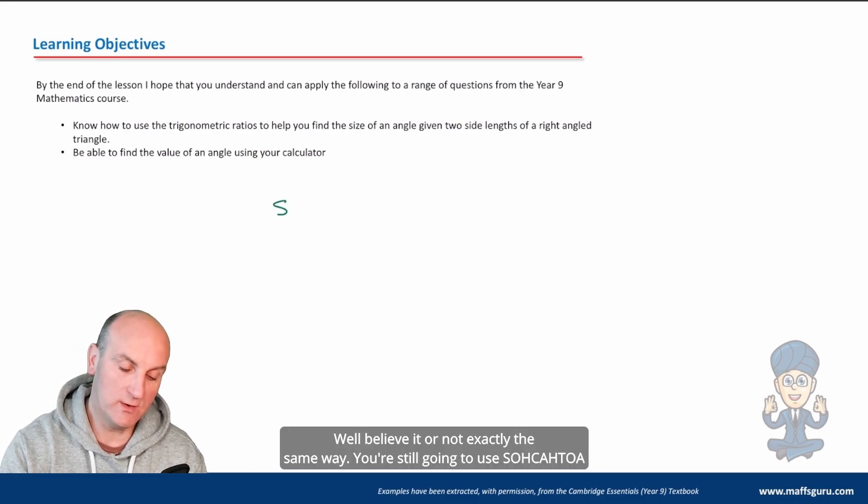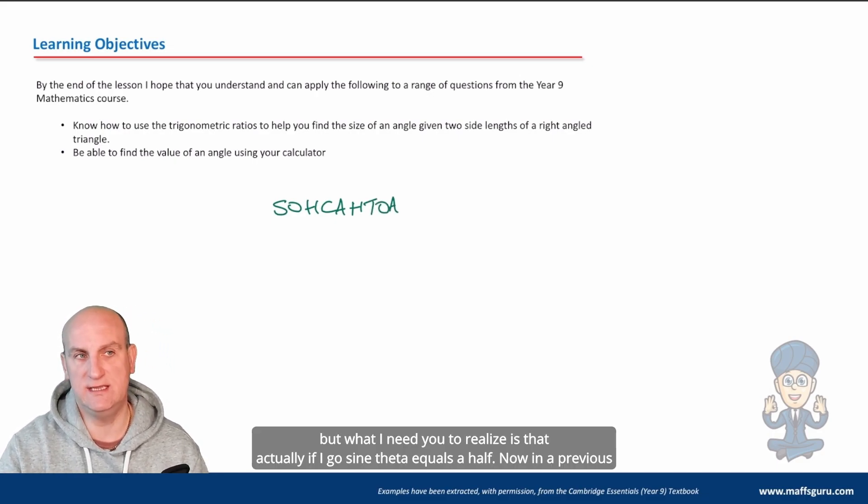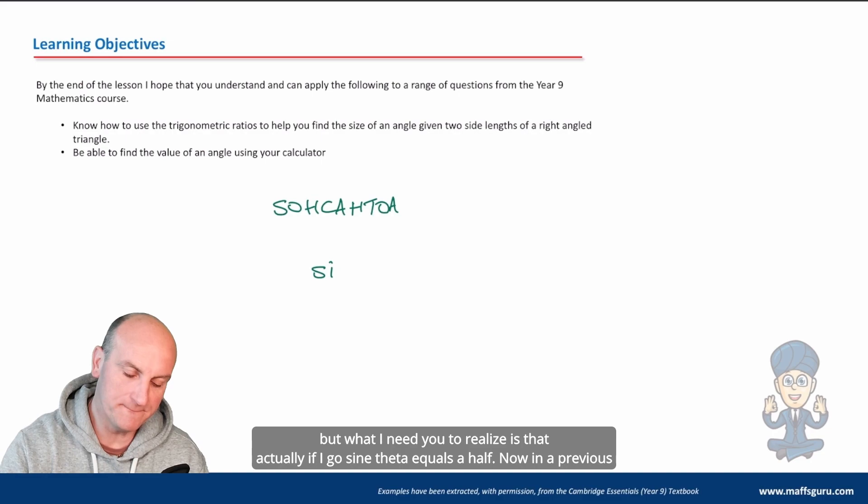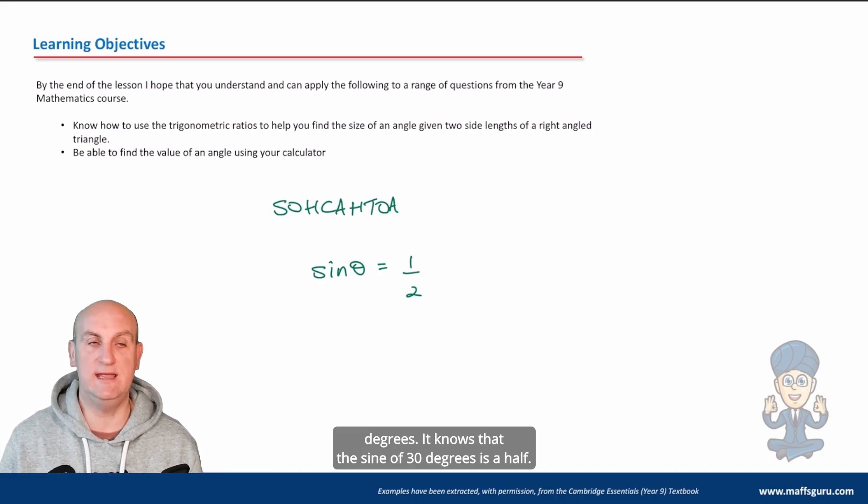Well, believe it or not, exactly the same way. You're still going to use SOHCAHTOA. But what I need you to realize is that if I go sine theta equals a half, in a previous video, your calculator knew that that was 30 degrees. It knows that the sine of 30 degrees is a half.